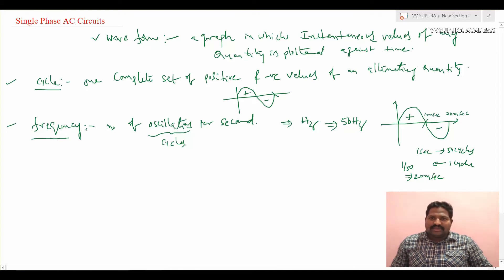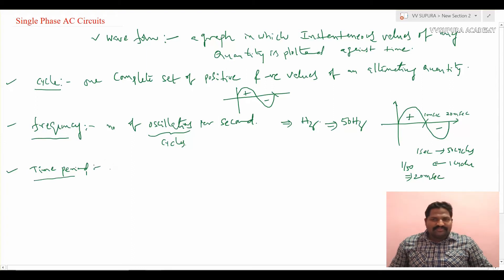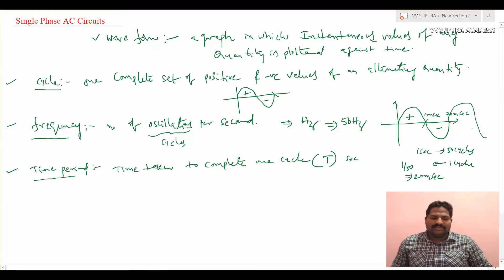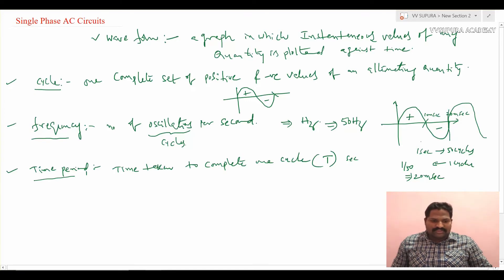That time — the seconds — is what we also call the time period. Time period is defined as the time taken to complete one cycle. It is represented by T, in seconds or milliseconds. After the positive cycle and negative cycle, the cycle will be repeated again. The time from when the waveform started until the waveform repeats the same pattern is called the time period.